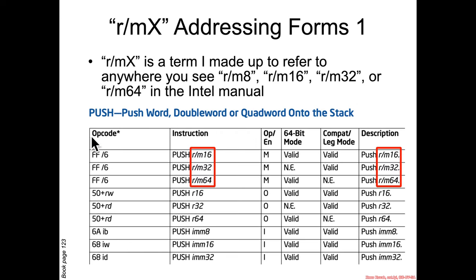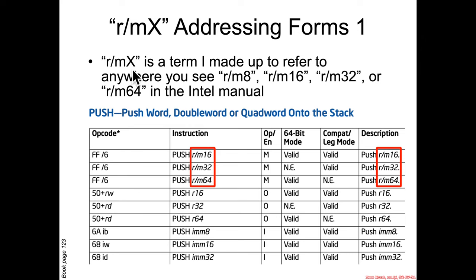The RMX form of addressing — I completely made up this term RMX to refer to places in the Intel manual where you see RM8, RM16, RM32, or RM64. For instance, in the push instruction, the manual is the true source of what is possible. Push has RM16, RM32, and RM64 forms, and certain versions like RM32 are not actually valid in 64-bit mode. So when I talk about assembly instructions, I'll just say it takes an RMX form.